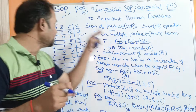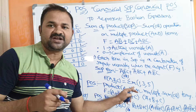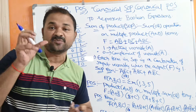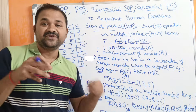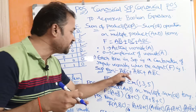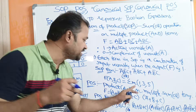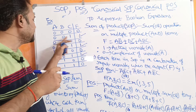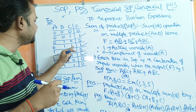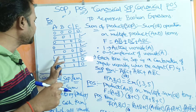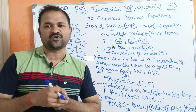So F of A, B, C equals these product terms combined with plus operations — summation. For summation we use sigma. These product terms are nothing but minterms, represented by small m. So F(A,B,C) = σm(1, 3, 5), since 001 = 1, 011 = 3, and 101 = 5 in decimal notation.